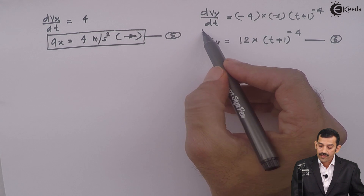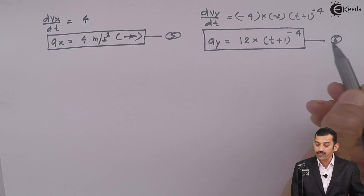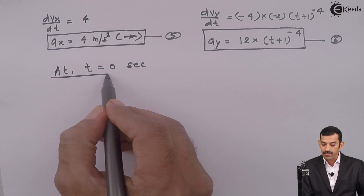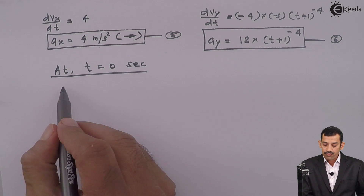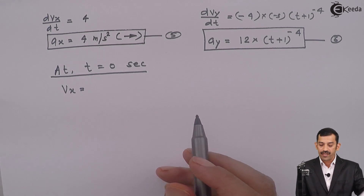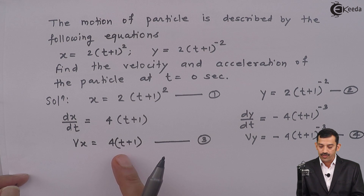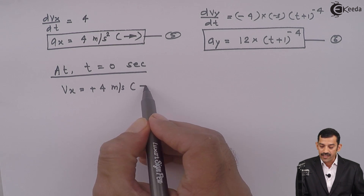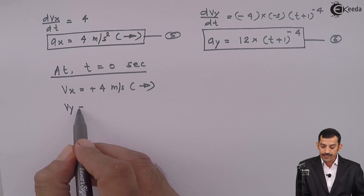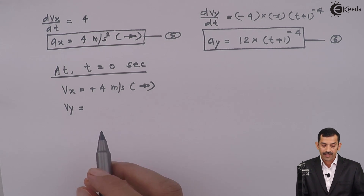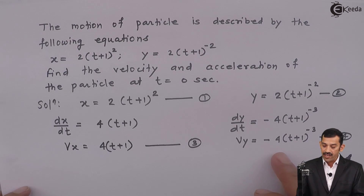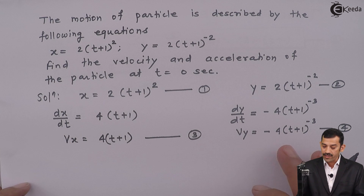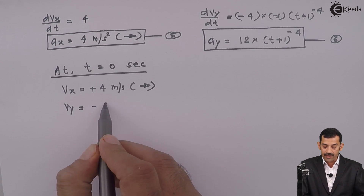Now we need to find the resultant velocity and resultant acceleration at t equal to 0 second. Using equations 3 and 4, we find vx and vy. Substituting t = 0 in the equation of vx, which is 4(t + 1): putting t = 0 gives vx = 4 meters per second, direction rightward. For vy, the equation is minus 4(t + 1) raised to minus 3. At t = 0, we get 1 raised to minus 3 = 1, so vy = minus 4 meters per second.